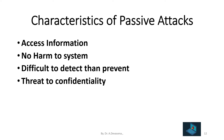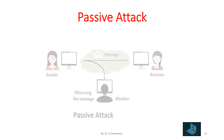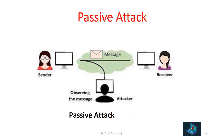Examples of passive attacks include snooping and traffic analysis. In the representation of a passive attack, the sender is sending the message to the receiver, and the passive attacker only observes the message sent by the sender. The passive attacker does not change the information. The receiver receives the message exactly as it was sent by the sender. This is represented as a passive attack.